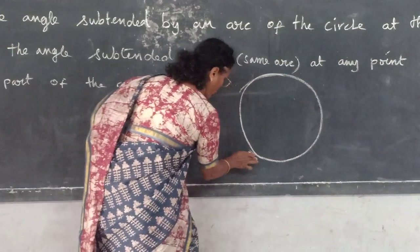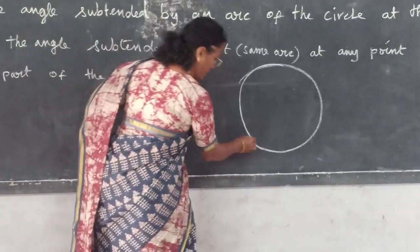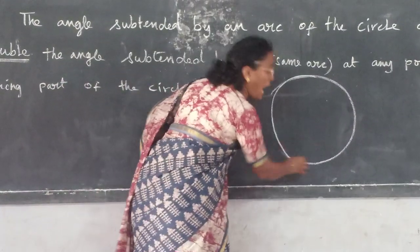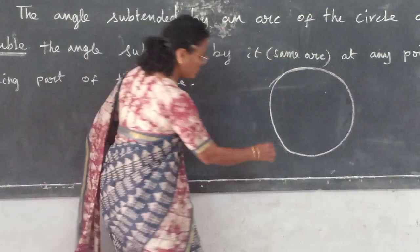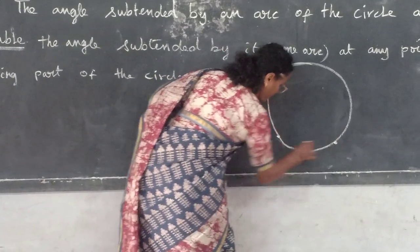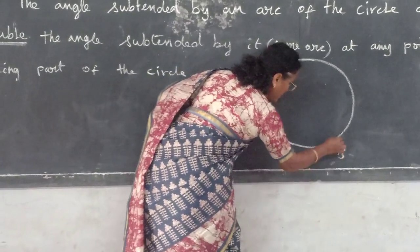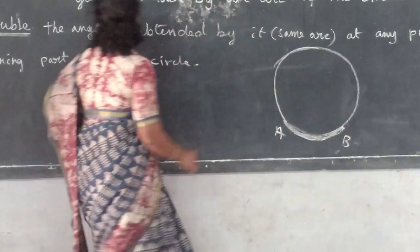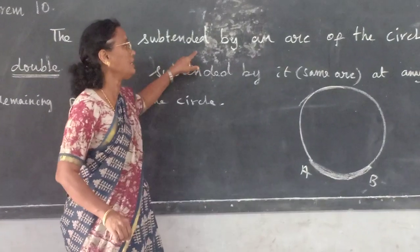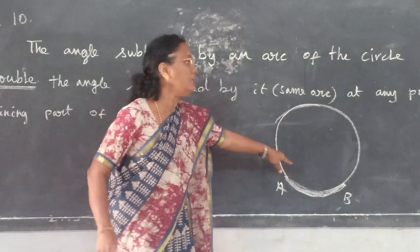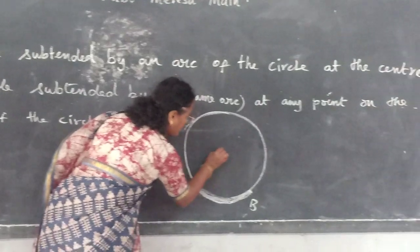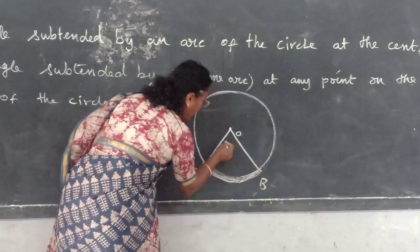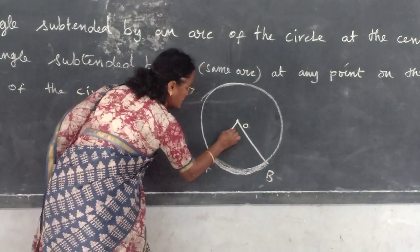Arc of a circle — I told you what is meant by arc. It is the part of a circumference. So let me take the part: A, B. So A, B is an arc here. I am taking this arc. The angle subtended by an arc of the circle at the center. So what is the angle subtended by arc A, B at the center?